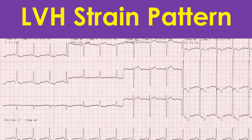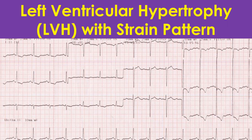ECG showing gross LVH with strain in a case with severe aortic stenosis. The R waves in V5 and V6 are so tall that they are overlapping with the tracing in the channel above. ST segment depression and T wave inversion are seen in inferior and lateral leads.